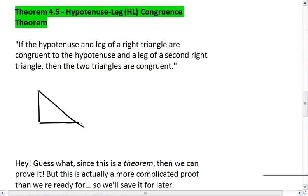What the hypotenuse leg theorem tells us, though, is that if I have two right triangles, and it does need to be right triangles because we do have a hypotenuse. If I have two right triangles, and if the hypotenuse, which is the side across from the right angle, and one of the legs of that right triangle are congruent to the hypotenuse and the leg of the second right triangle, then the triangles are congruent.